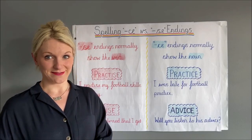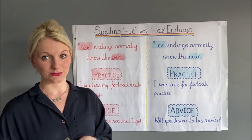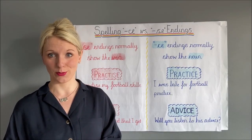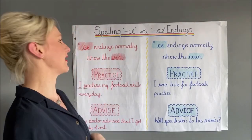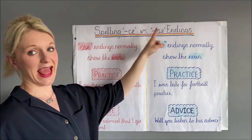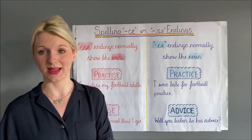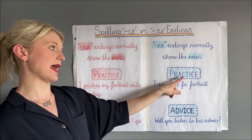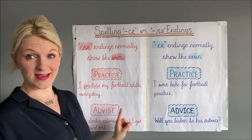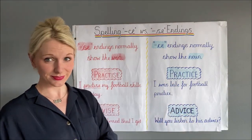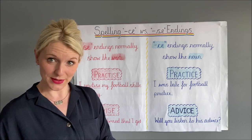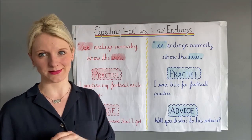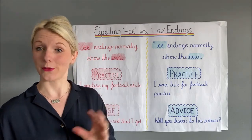Hello everyone and welcome back to another Year 5 and 6 English tutorial. Today we are looking at a very common spelling error that people make in their writing, and that is spelling homophones that have both a CE and an SE ending correctly. So we're talking about words like practice and practise, or advise and advice, that sound very similar but have two different spellings and two different meanings. We're going to look at how to tell apart which one is which and how to spell each one.